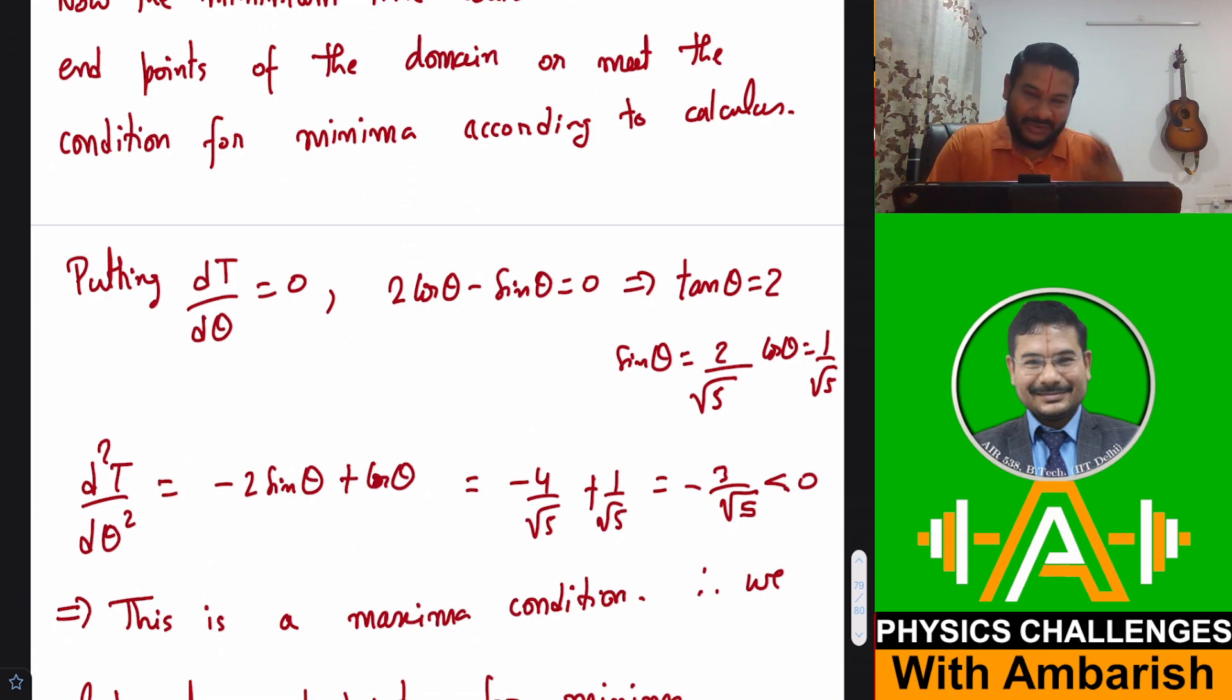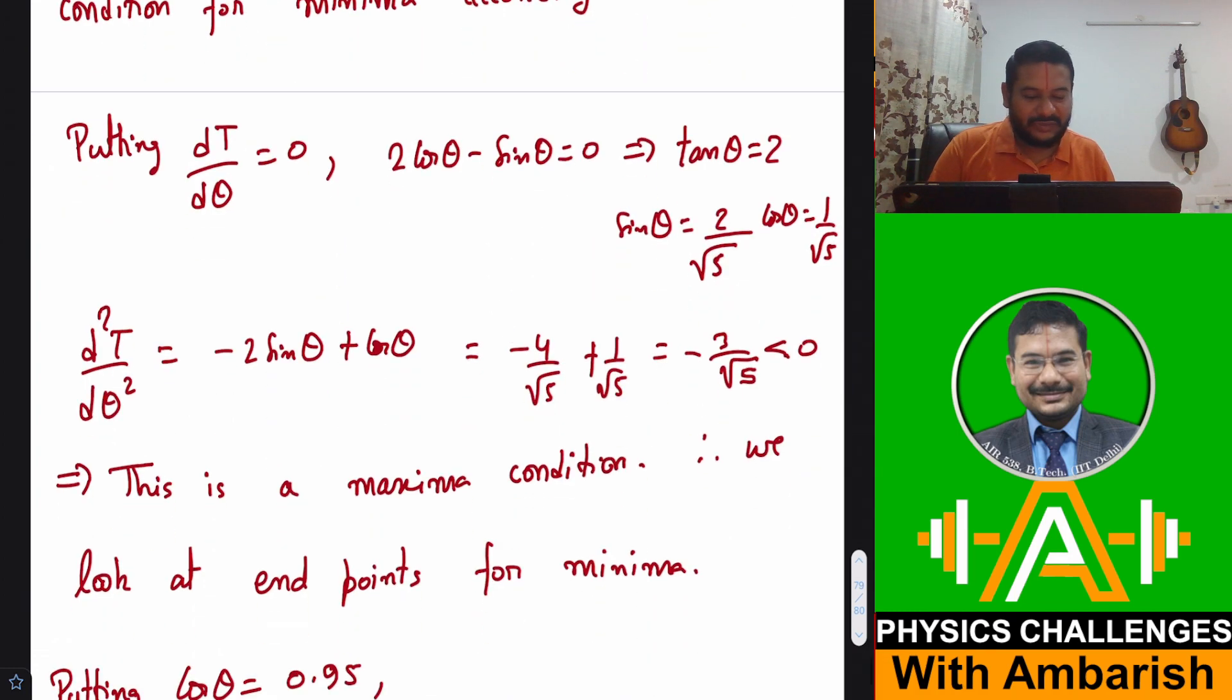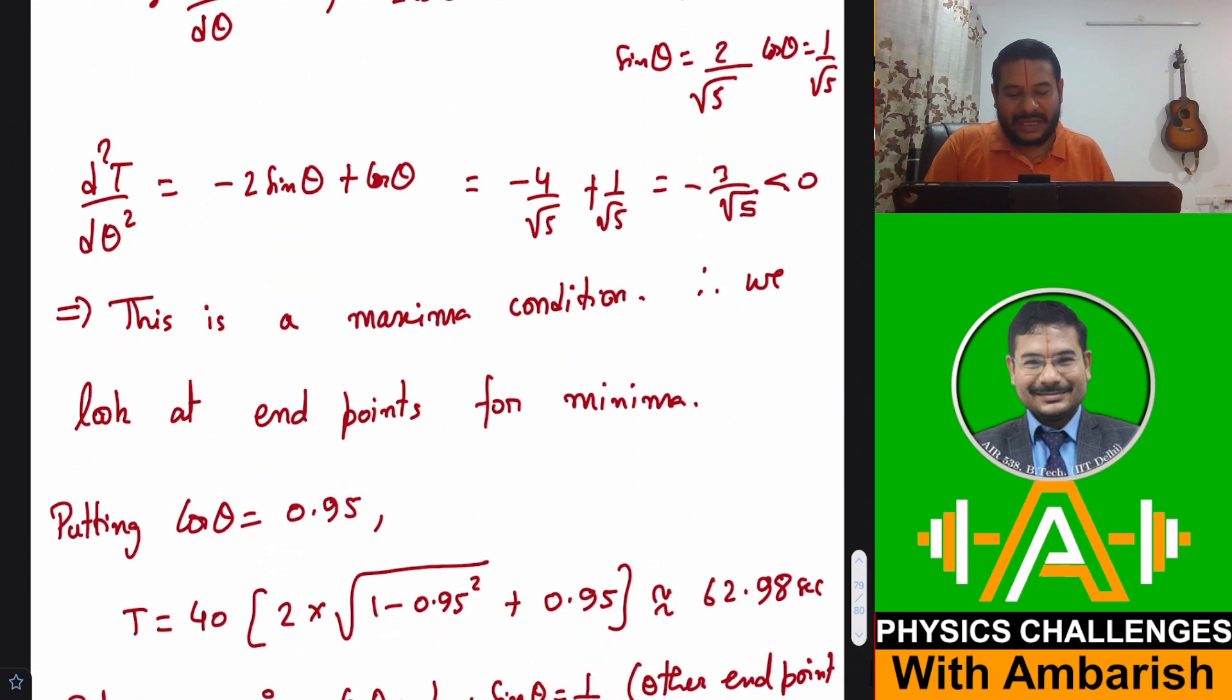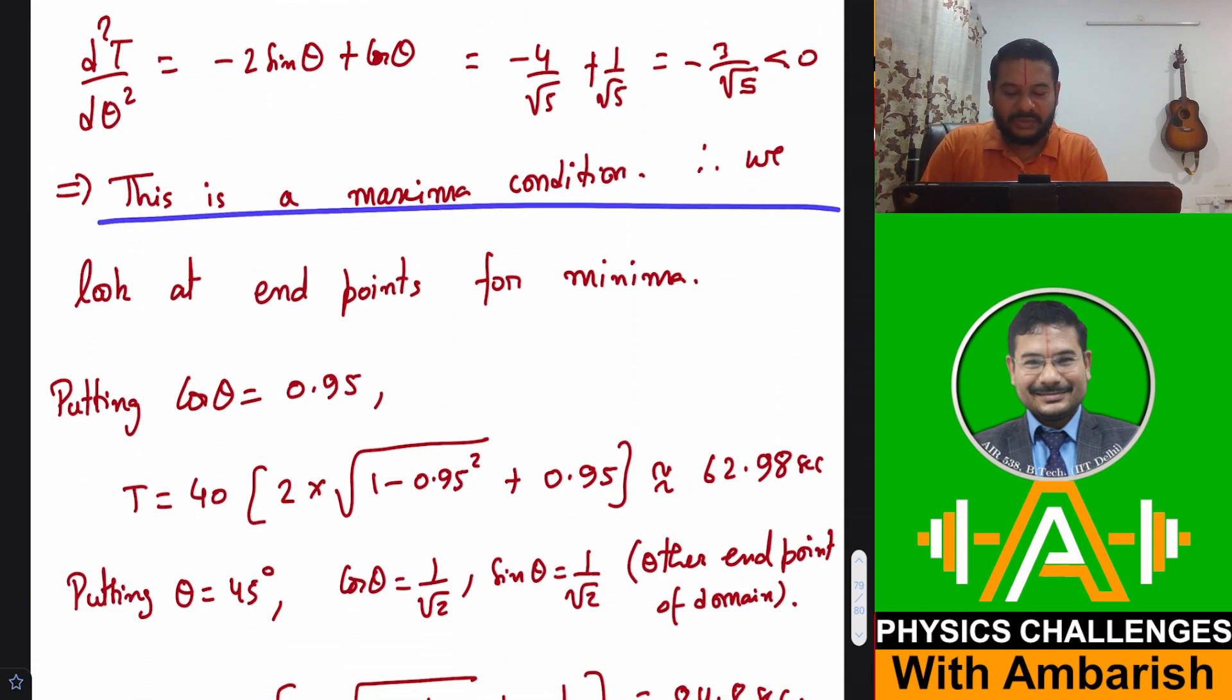So calculus did not give us the minimum time. That means what? What happens in that case? Then you look for the end points of the domain for minimum, because in between you are getting maximum. So it is not the calculus peak that we are interested in now. This is the maxima condition. We look at the end points for minimum.